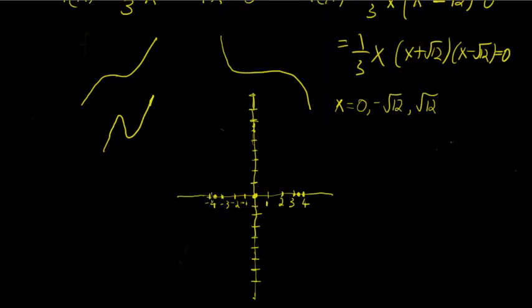So I've gone ahead and marked our three x-intercepts of this function, also known as the zeros. We have one at x = -√12, so that's somewhere between -3 and -4. We have one at x = 0, and one at x = positive √12. Again, that's somewhere between positive 3 and positive 4.